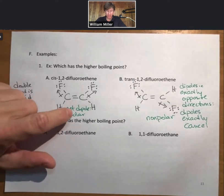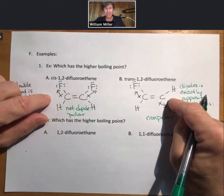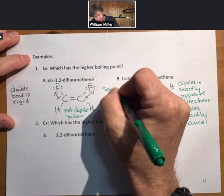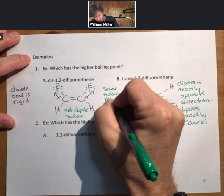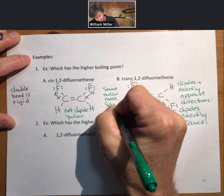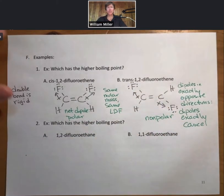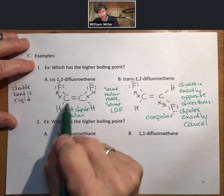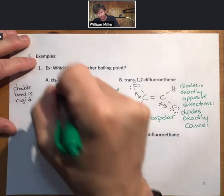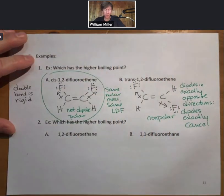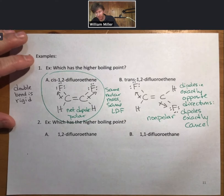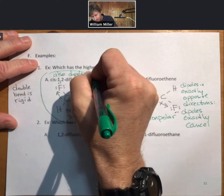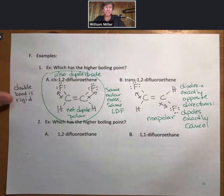And this is polar. This is a polar molecule. So both of these have the same molar mass. So same LDF. Which is one of the reasons this is nice because you can see from the formulas, they have the same atoms. They have the same molar masses. This one's polar. Which one has the higher boiling point? It will be the polar one because it also has dipole-dipole forces as its dominant or strongest type of intermolecular force.